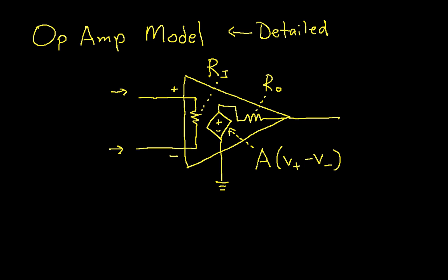Inside a real op-amp circuit, there are somewhere between 20 and 40 transistors and a lot of resistors, and a whole lot of effort has gone into the design. So this is a much simpler model than the actual circuit, but this again is what we call a detailed model because it shows the input resistance, the output resistance, and the gain.